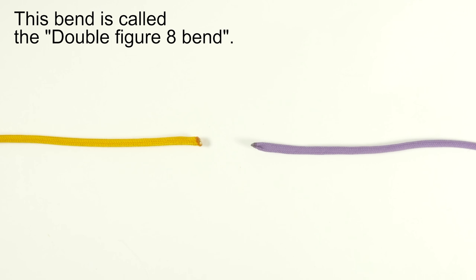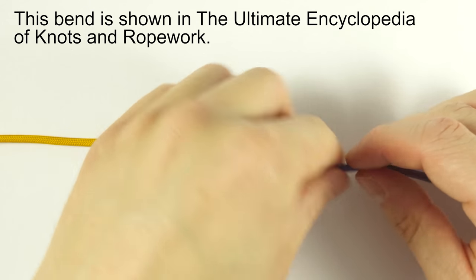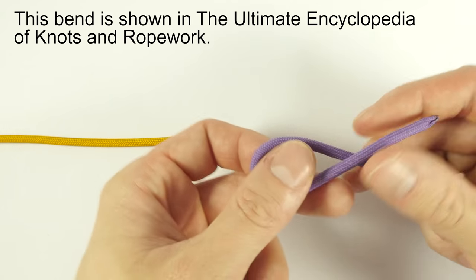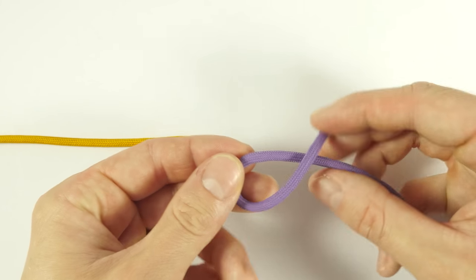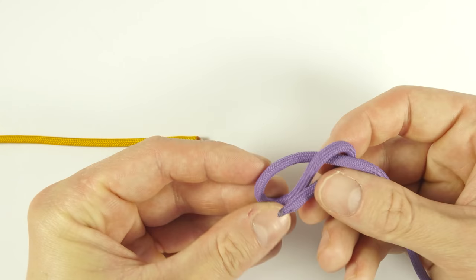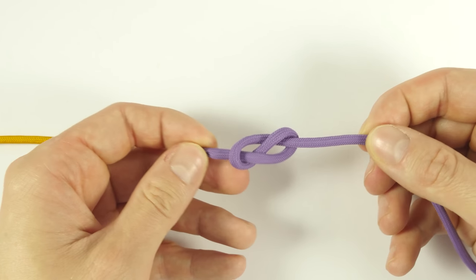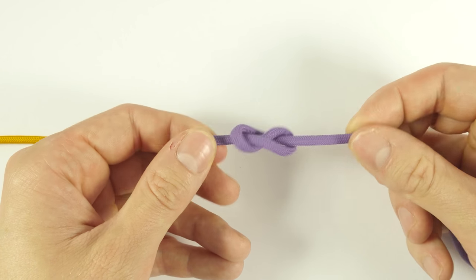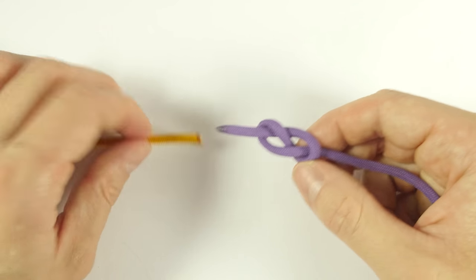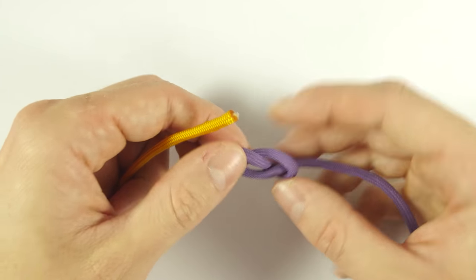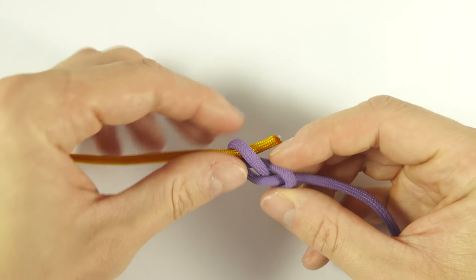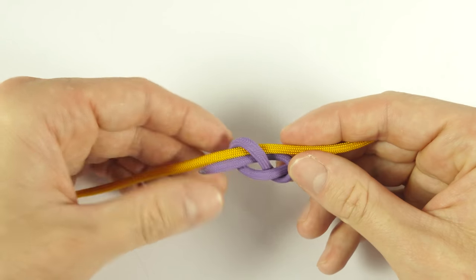And finally, another way of joining two ends together using a figure 8 knot, this time the double figure 8 bend. Take one of the ends and use it to create a figure 8 knot. Like this. Pass the other end alongside the working end of the first cord like this.